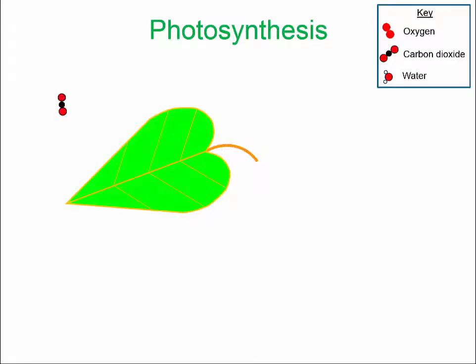Carbon dioxide also enters the leaves via the stomata, which are small pores or holes on the surface of leaves.